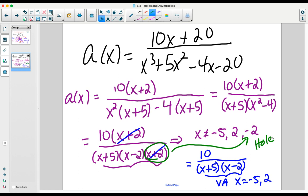And again, if I want to sub that number in to the final simplified form of the polynomial, I can figure out that my hole is going to be at the point negative 2, negative 5 sixths, which is the result of that substitution.